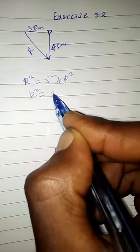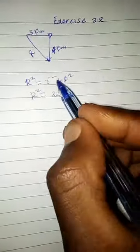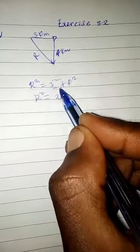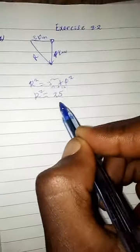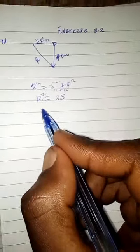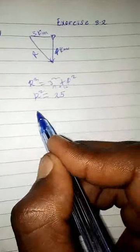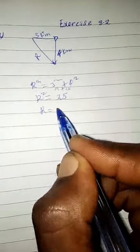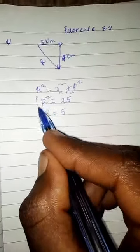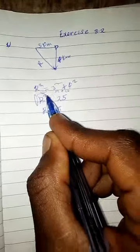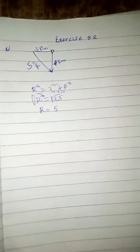That equals 25. Taking the square root, the displacement is the square root of 25, which equals 5 km.